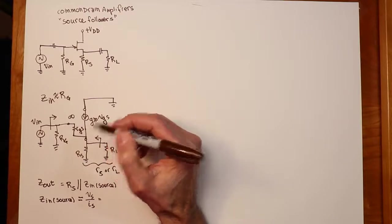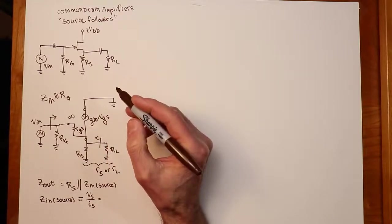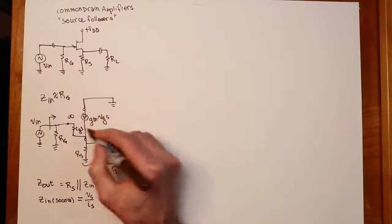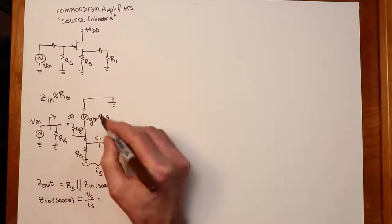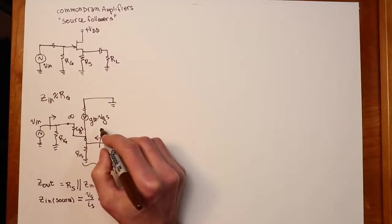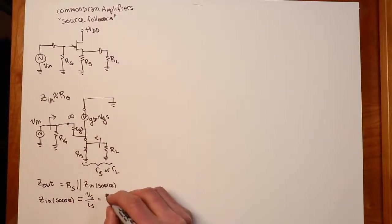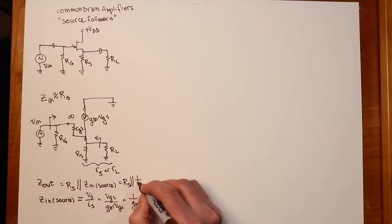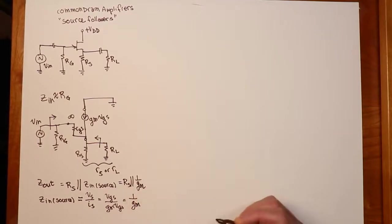Well what's your VS? For your AC analysis here, your gate is virtually ground. So your source voltage is your gate source voltage. And then IS of course is the source current, that is the drain current. Source current and drain current are the same current. So you basically have the ratio of VGS over GM*VGS, which is of course 1 over GM. So your ZOUT is just RS in parallel with 1 over GM.